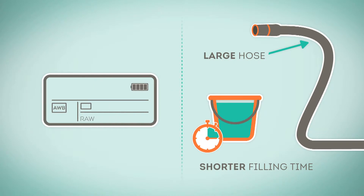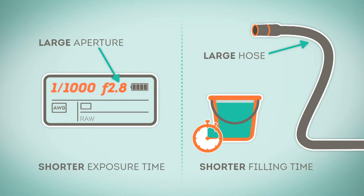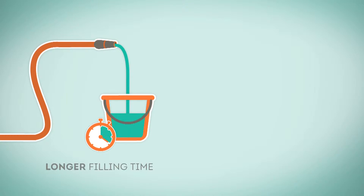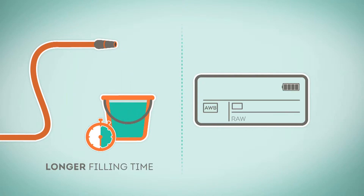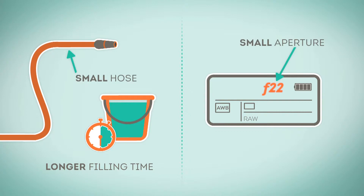In the same way that with a large aperture we get more light, requiring a shorter exposure time. And using the small hose, we will fill the bucket slower, requiring a longer filling time. In the same way that with a small aperture we get less light, requiring a longer exposure time.